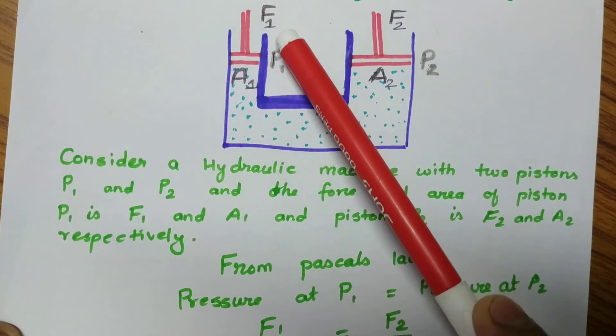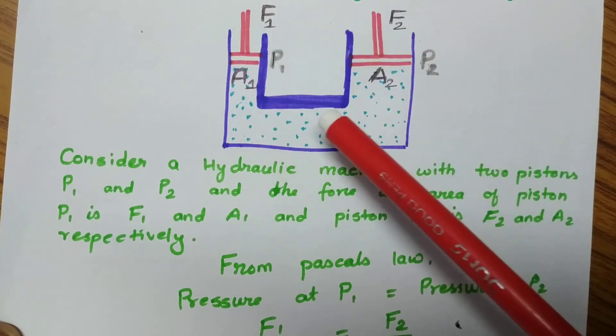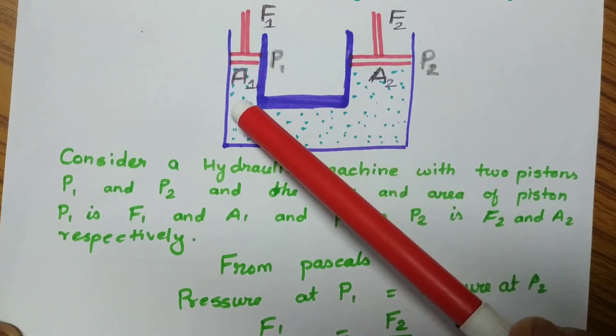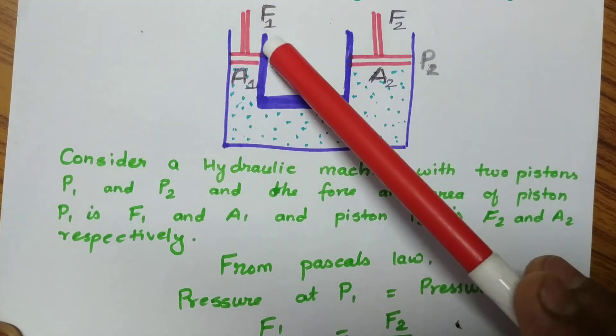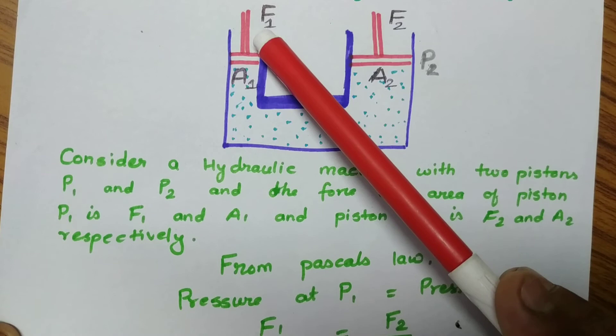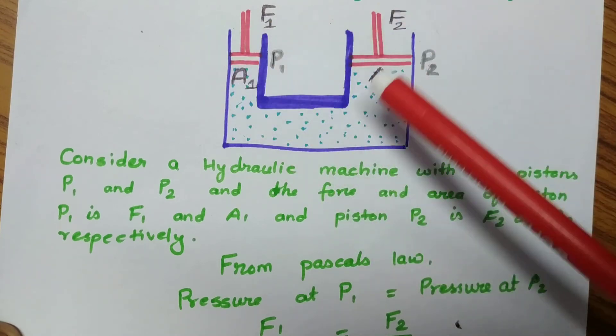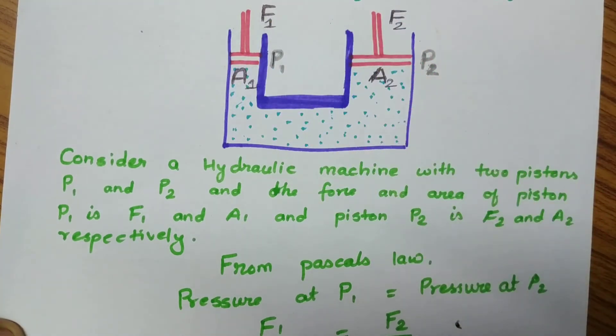This force becomes multiplied by the hydraulic machine. The hydraulic machine will multiply the force you apply, and you can do work that requires higher force in piston 2. This is called the principle of hydraulic machines.